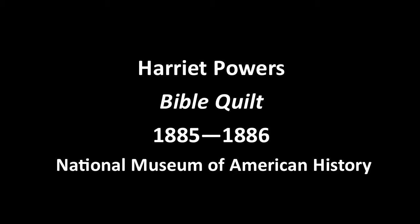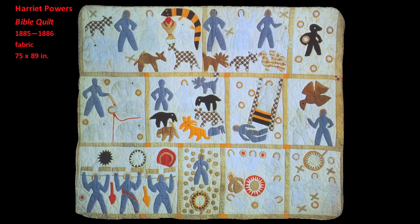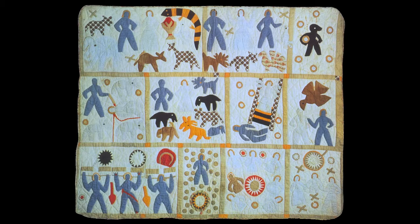Welcome to class. This quilt, which is known as a Bible quilt, is by the African American artist Harriet Powers. Constructed of 11 panels, arranged in three rows, this quilt has been called a sermon in patchwork. What is unique and amazing about this Bible quilt is how Powers organizes, juxtaposes, and connects the individual story panels into a visual narrative.